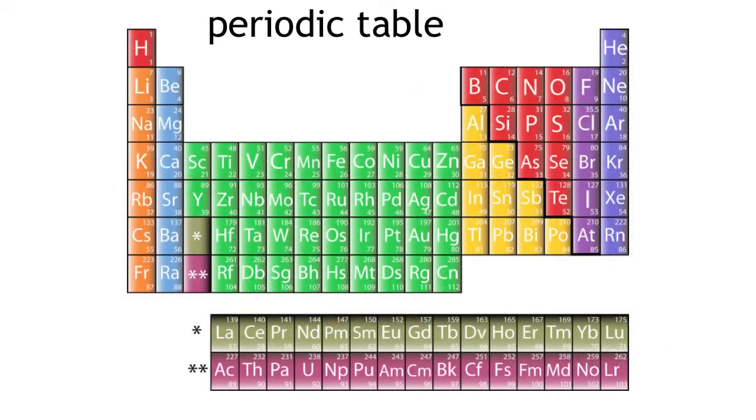Different isotopes of elements do not have separate positions on the periodic table. They occupy the same spot because they have the same number of protons.